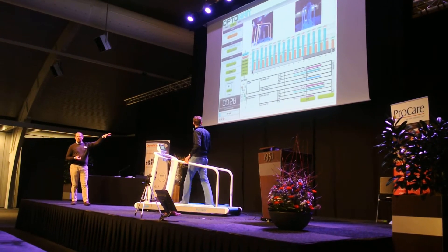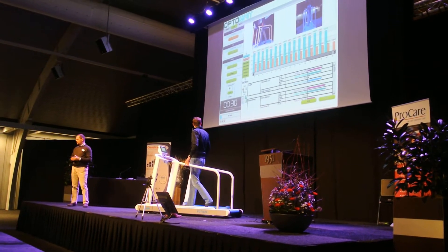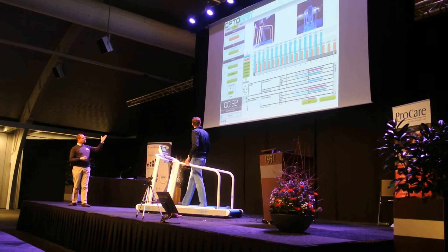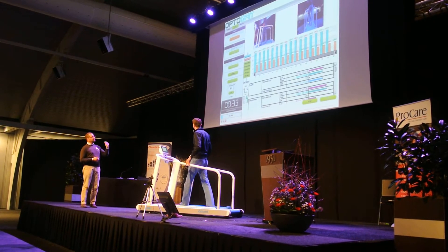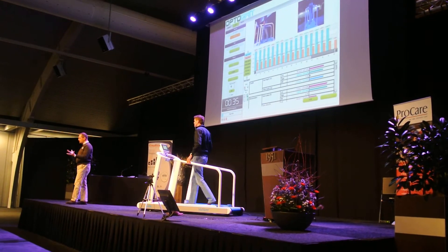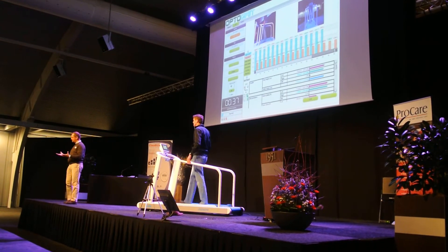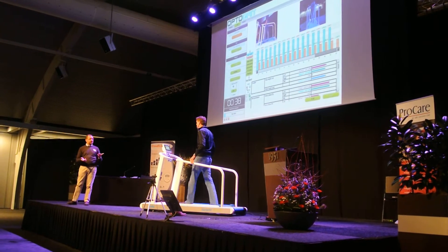And immediately on the lower part we have what we call a gait report, where we have step length in centimeters with the asymmetry, left and right, and the variability.